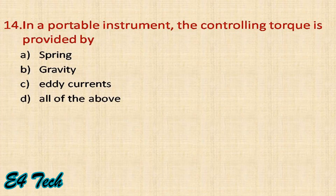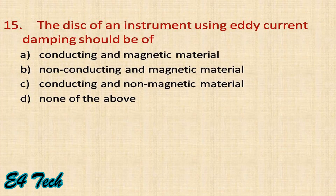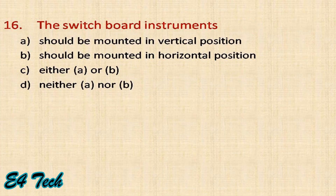In a portable instrument, the controlling torque is provided by springs. On the disc of an instrument using eddy current damping, the disc material should be conducting and non-magnetic.